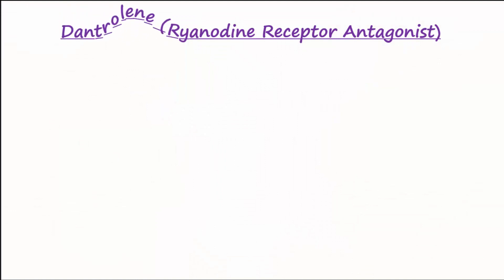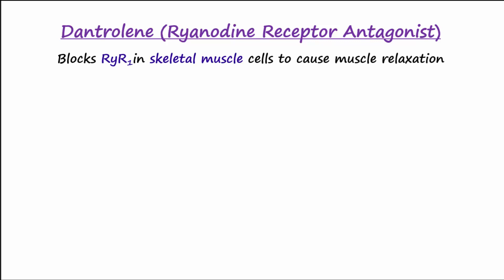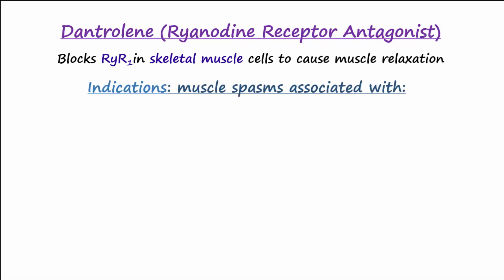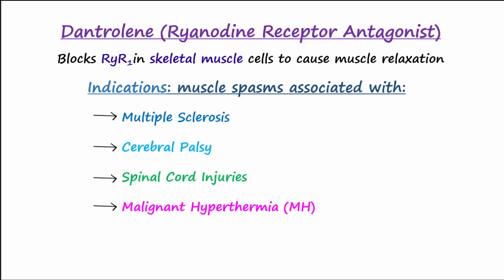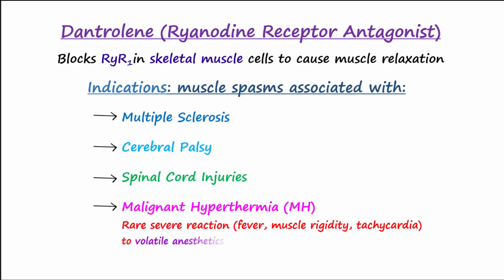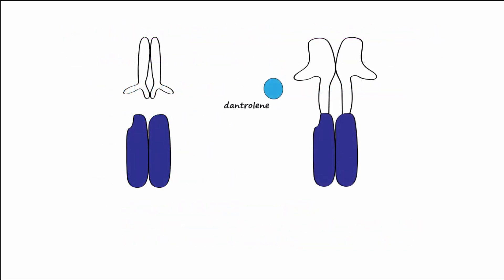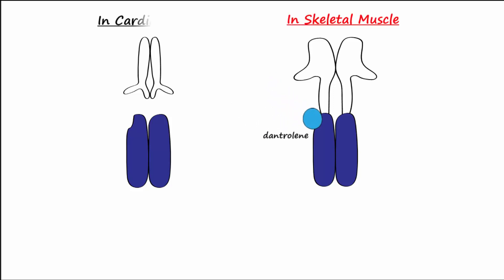Dantrolene is a direct-acting muscle relaxant that blocks ryanodyne receptors in skeletal muscles. It is indicated for the treatment of muscle spasms associated with multiple sclerosis, cerebral palsy, spinal cord injuries, and malignant hyperthermia, or MH. MH is a severe reaction characterized by fever, muscle rigidity, and tachycardia. Although rare, MH occurs in susceptible individuals exposed to volatile general anesthetics like halothane, and depolarizing neuromuscular blockers like succinylcholine. Dantrolene is more selective for skeletal muscle because the heart has ryanodyne type 2 receptors instead of type 1, which is located in skeletal muscle.